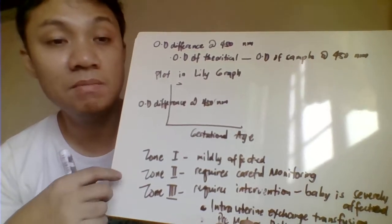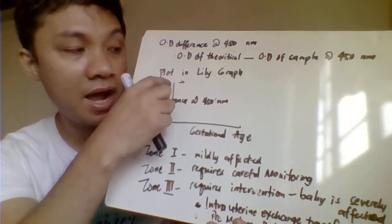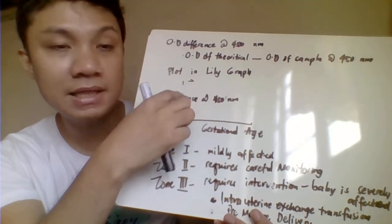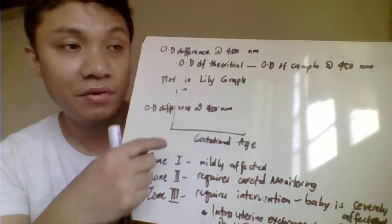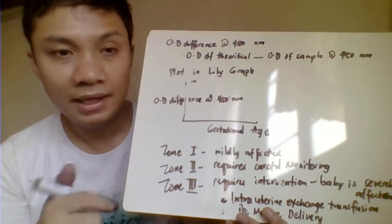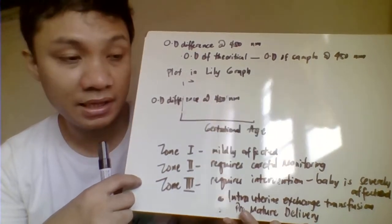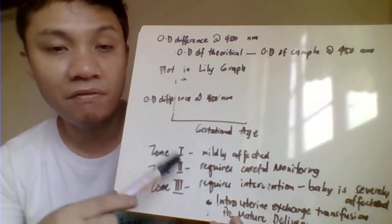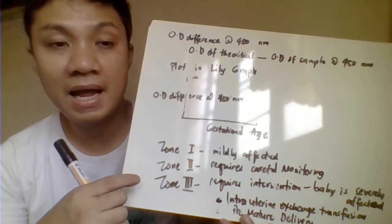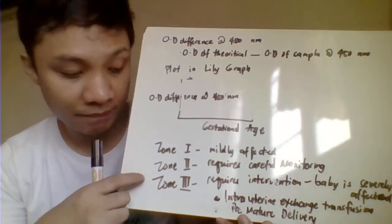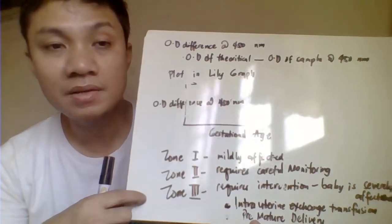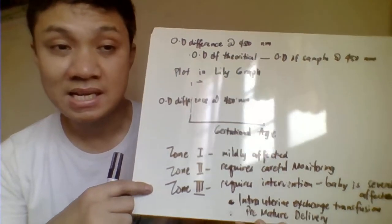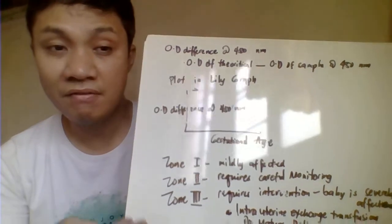The specimen OD difference at 450 nm is then plotted on the Liley graph. On the Liley graph, the x-axis shows the optical density difference at 450 nm and the y-axis shows the age of gestation. The Liley graph is divided into three zones. If the result falls in Zone 1, it signifies a mildly affected fetus. Zone 2 requires careful monitoring. Zone 3 means the fetus is severely affected and requires immediate intervention, as the baby could die.